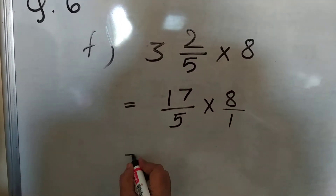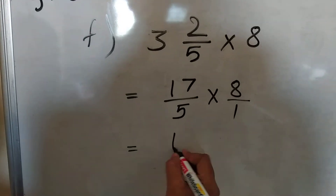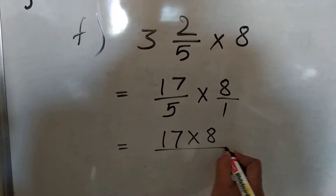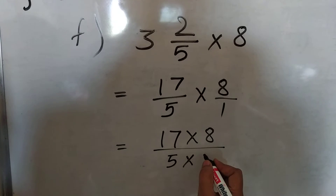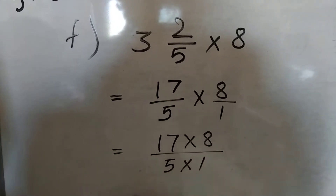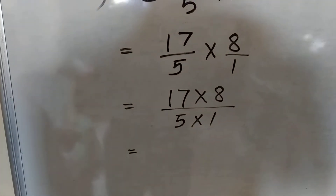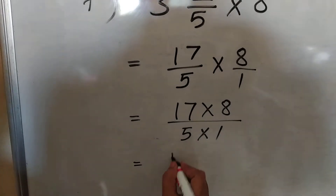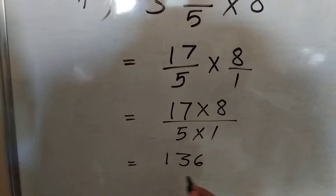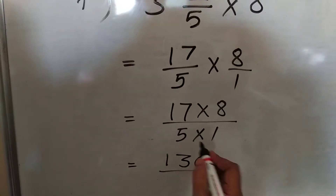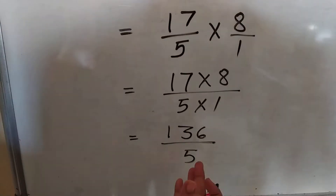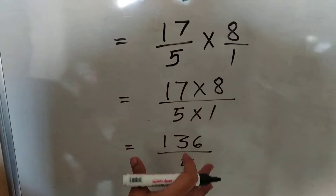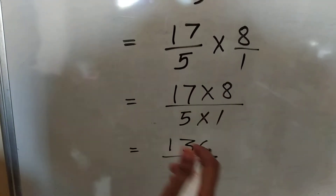Take denominator 1, and do the multiplication: 17 into 8 upon 5 into 1. You know the table of 17 — 17 eights are 136. 5 and 1 is 5, so we get 136 upon 5.